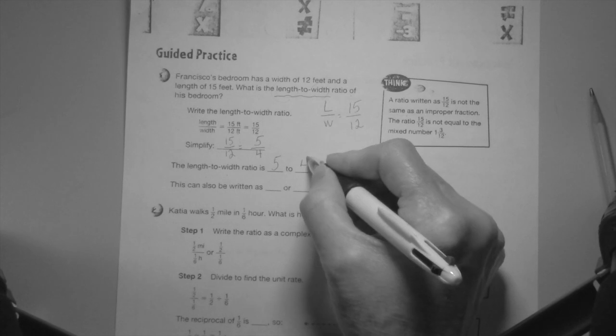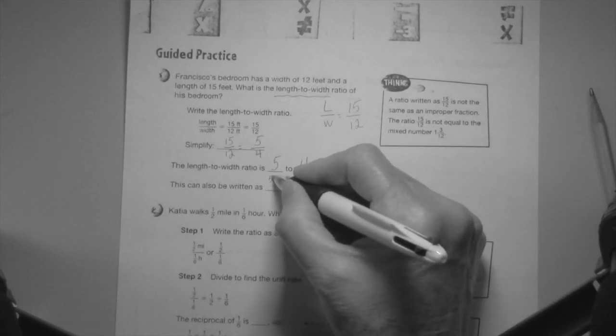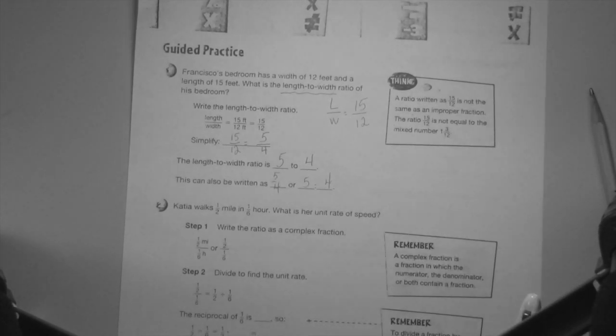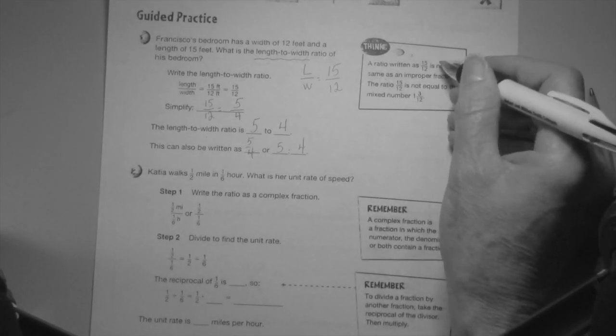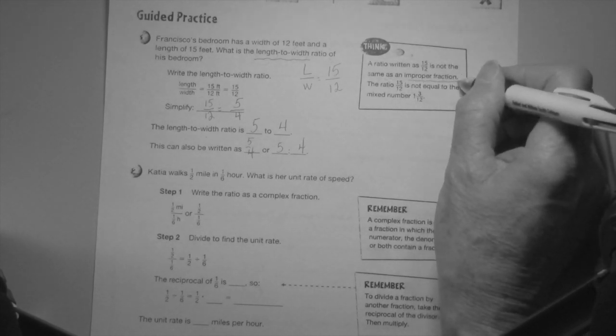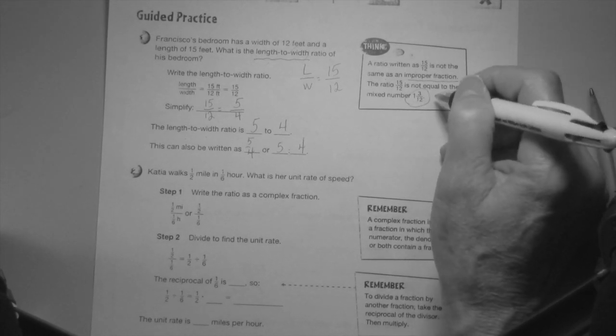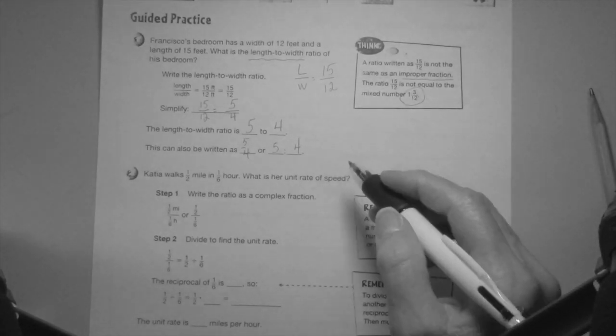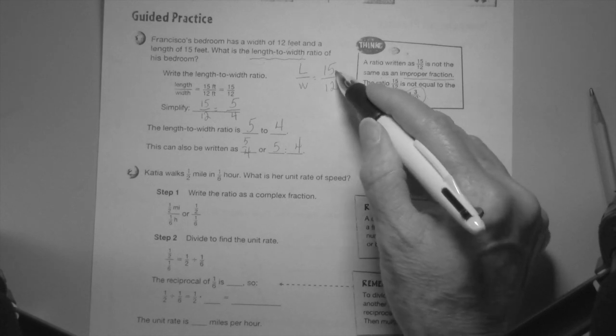Can also be written as 5 over 4 or 5 to 4. A ratio is written as 15 over 12 is not the same as an improper fraction. The ratio 15/12 is not equal to the mixed number of that. You don't want to change it, you want to just simplify it because this fraction line is really the two, how you say a ratio is five to twelve.